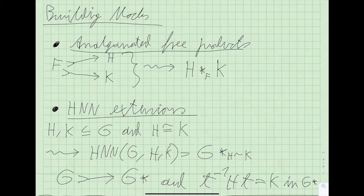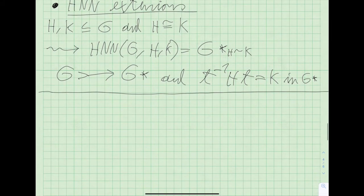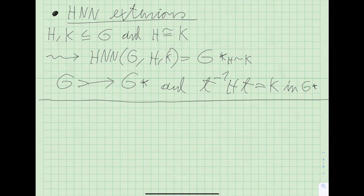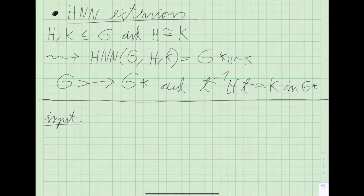The H, N, and N in HNN extension stands for Higman, Neumann, and Neumann, who introduced this construction in 1949. They proved, for instance, that the embedding of G into G* is indeed an extension. For this exposition, I'm going to rewrite the input slightly to make things more convenient.